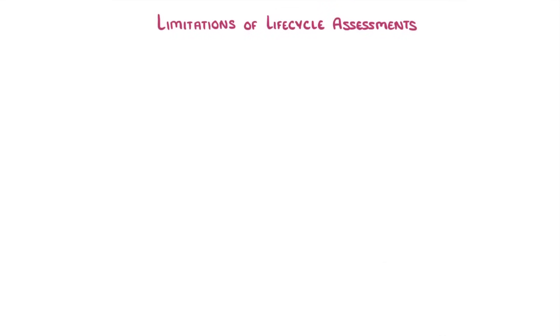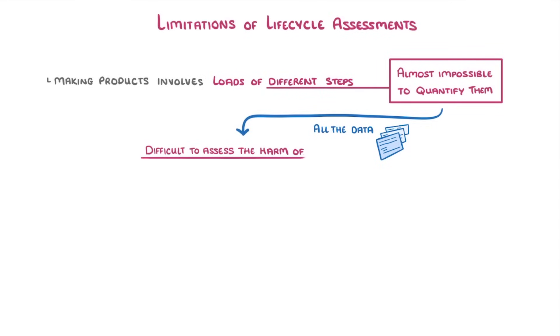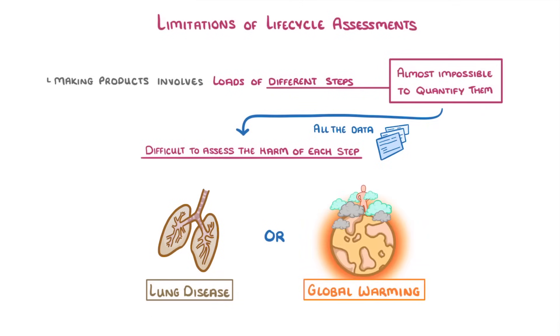The last thing we need to look at are the limitations of life cycle assessments. Most of the time, making products involves loads of different steps, and it can be almost impossible to actually quantify all of them. Even if you do manage to get all of the data — exactly how much energy was used, how many pollutants were produced, and so on — it's still difficult to assess the harm of each step. For example, how do you compare the production of particulates that contribute to lung disease to the production of greenhouse gases that contribute to global warming? It's very hard to say which of these is worse.